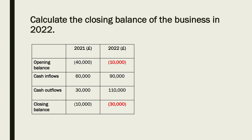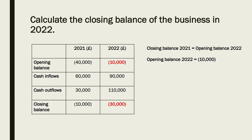If you struggled with that, let's go through how we calculated it. The closing balance for 2021 is the same thing as the opening balance for 2022, so we've moved the £10,000 across. Therefore, the opening balance for 2022 has to be minus £10,000.